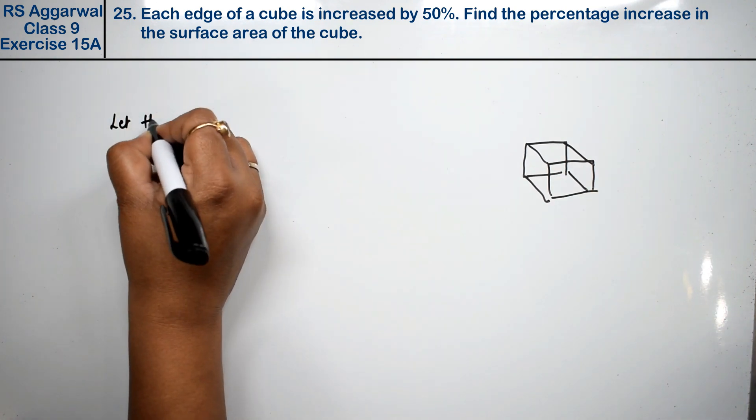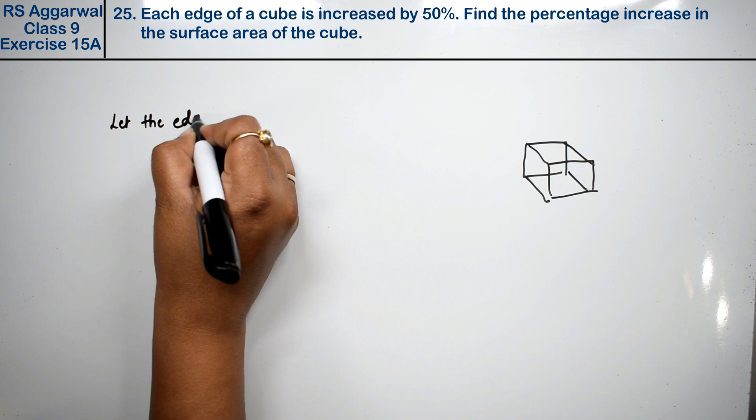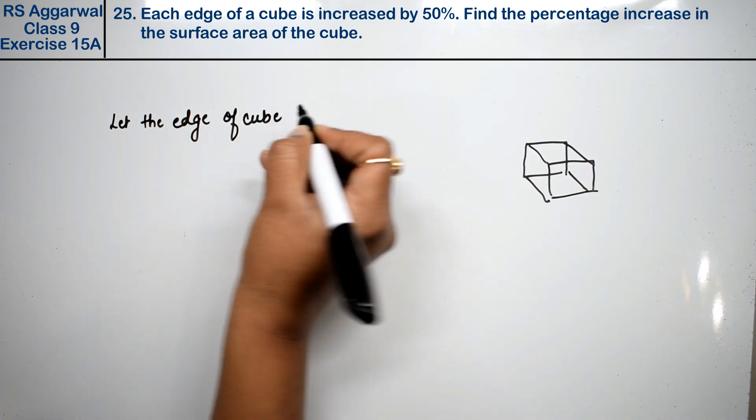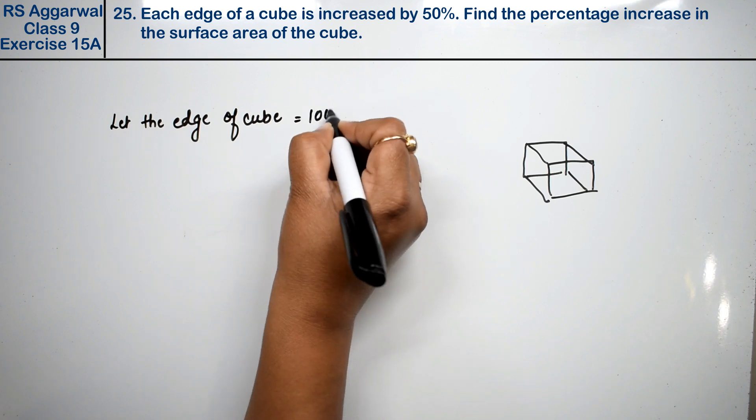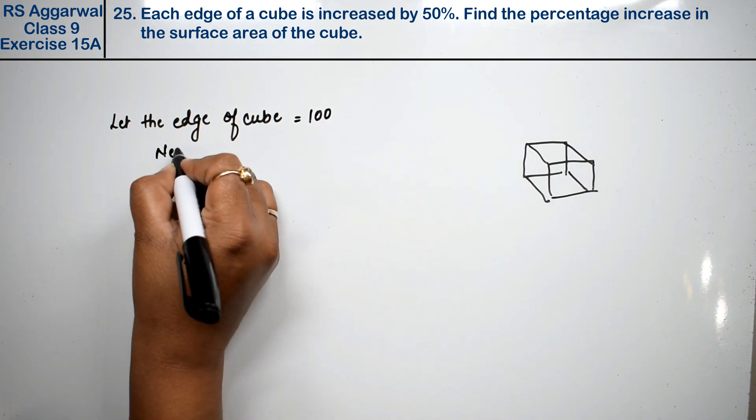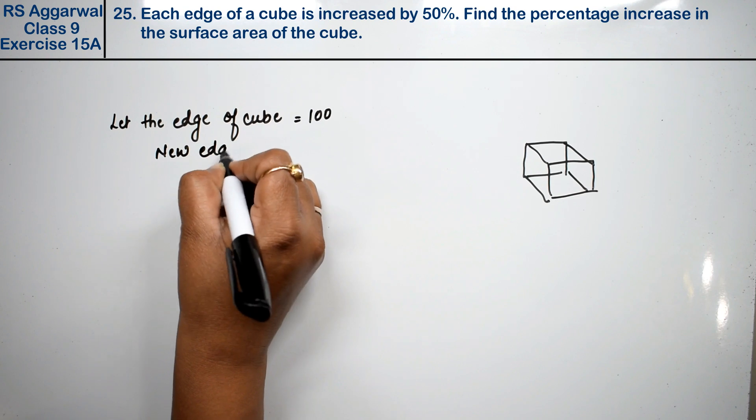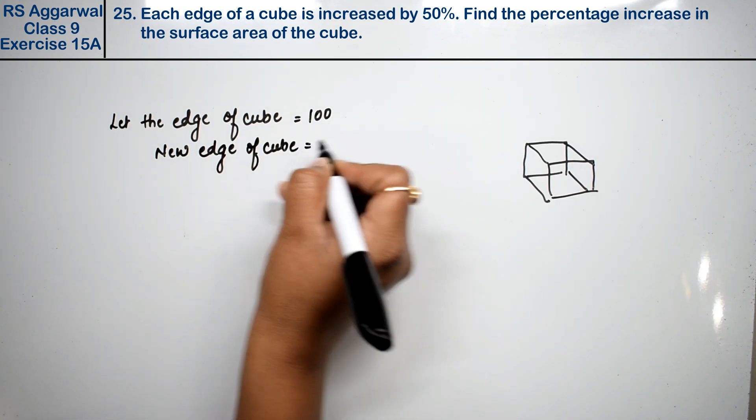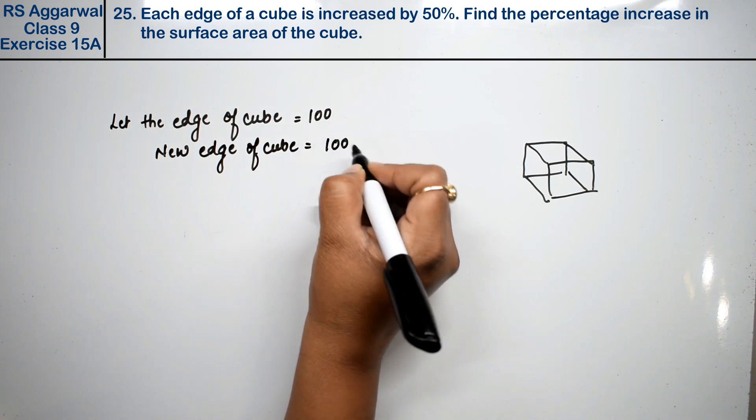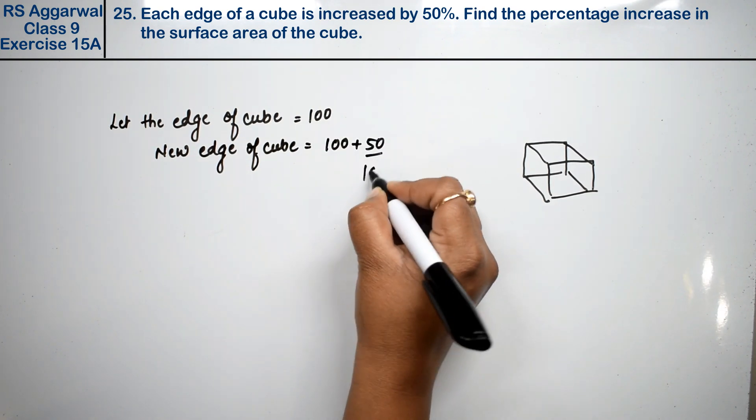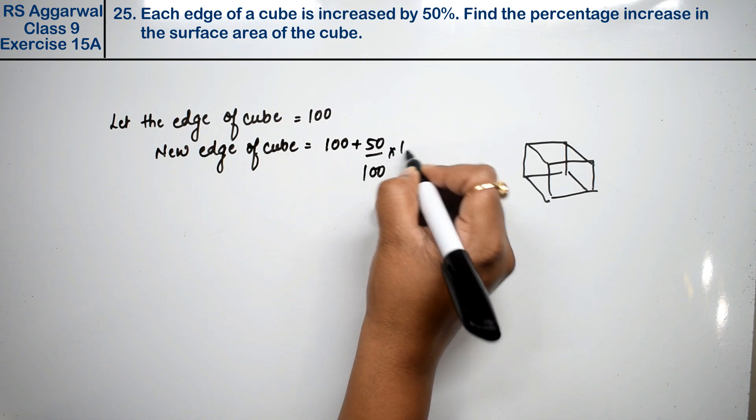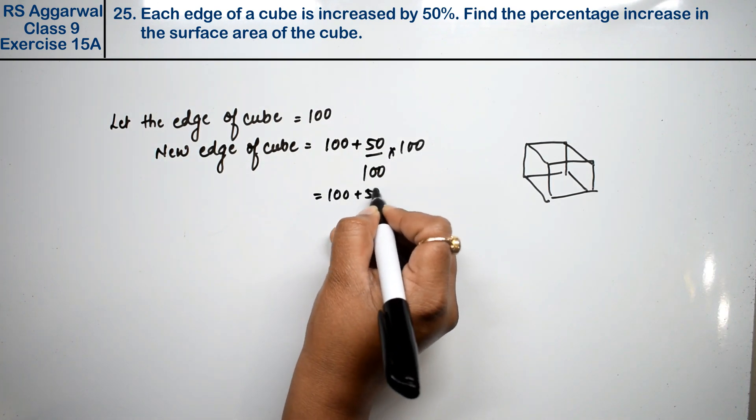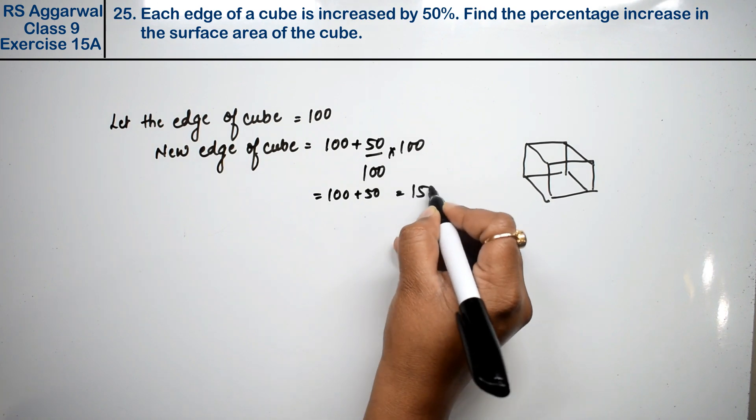Let's say the edge of the cube is 100. So what is the new edge of the cube? The new edge of the cube is increased by 50%. So how much is it? 100 plus 50, that is 150.